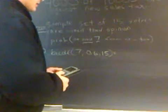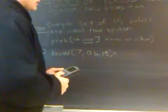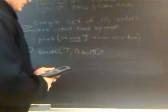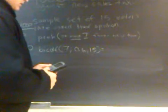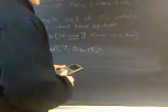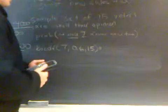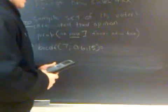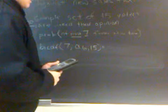The number of trials n equals 15. The probability of success is 0.6. The lower value should be 0, and the upper value should be 7. It's at most 7, which does not exclude 7. Hit enter.